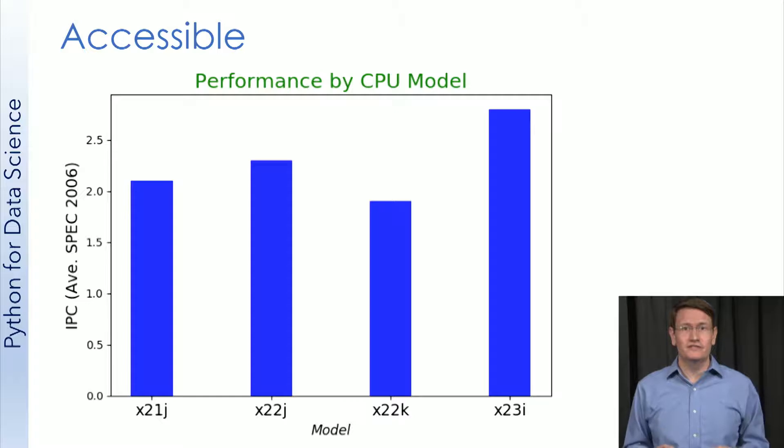We're reporting average IPC for an accepted benchmark suite, SPEC 2006, which is used by researchers in computer architecture. If these processor models are real, it's possible I know a lot about them and know how they differ architecturally. That gives me intuition about why these results differ by model.